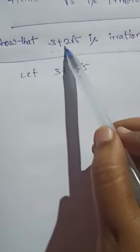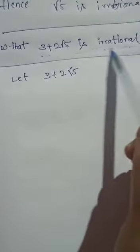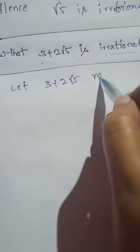To show that 3 + 2√5 is irrational, we have to prove 3 + 2√5 is irrational. Let 3 + 2√5 be rational. Rational means we can write it in the form of p by q.